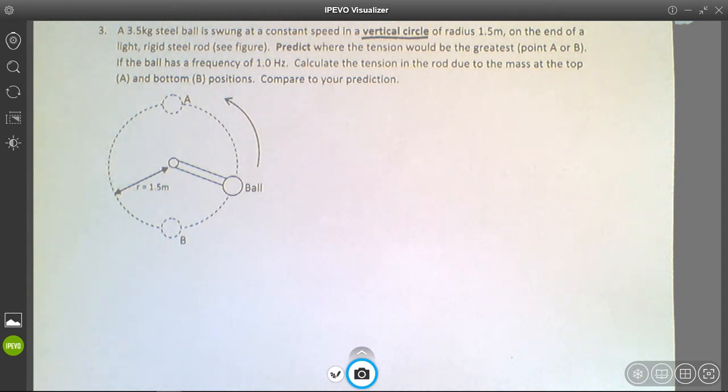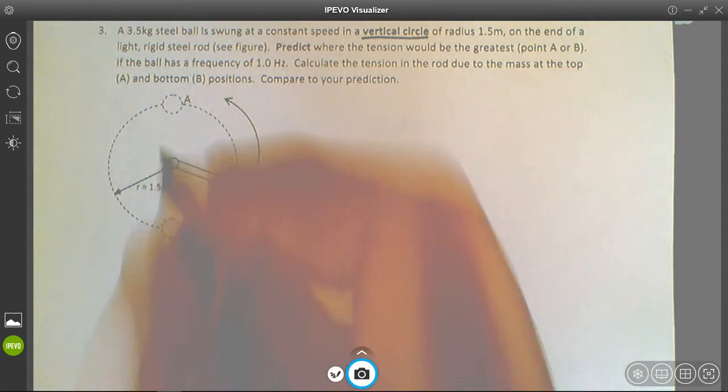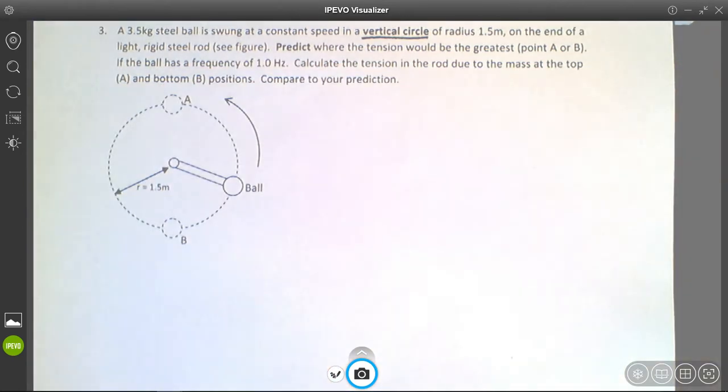In this case, we're going to look at what causes the centripetal acceleration for objects that are rotating in a vertical plane. Imagine that you're rotating this in a vertical plane like so.